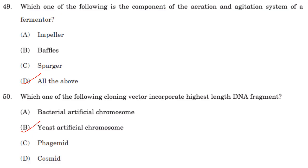Which of the following is a component of the aeration and agitation system of a fermenter? Impeller, baffle, and sparger are all components of the aeration and agitation system in a fermenter — all of the above.